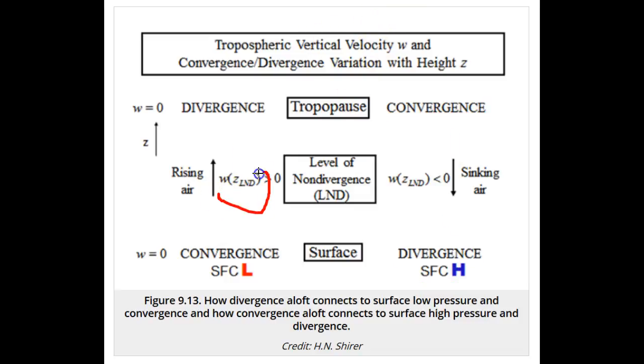The upward moving air above low pressure creates cooling, which leads to clouds and precipitation. The downward moving air above high pressure regions causes warming and drying, resulting in clear conditions.